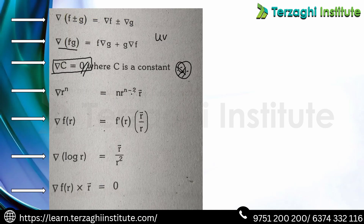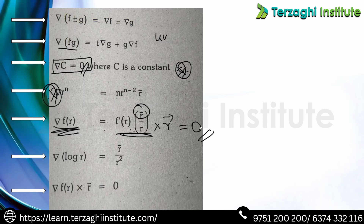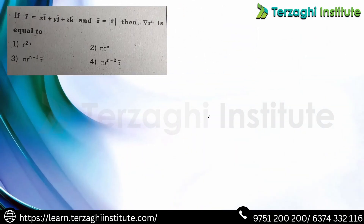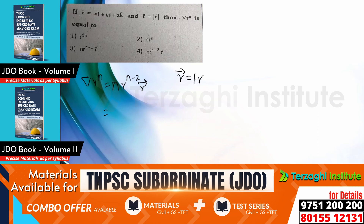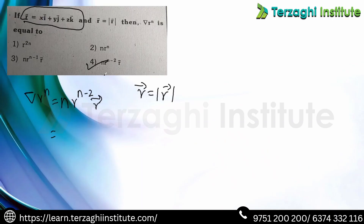Key formula: ∇(rⁿ) = n·rⁿ⁻²·r⃗. Also: ∇(f(r)) = f′(r)·(r⃗/r). And ∇r = r⃗/r. Using these: for the question involving del of rⁿ, the answer is n·rⁿ⁻² · r⃗. Answer is option 4.